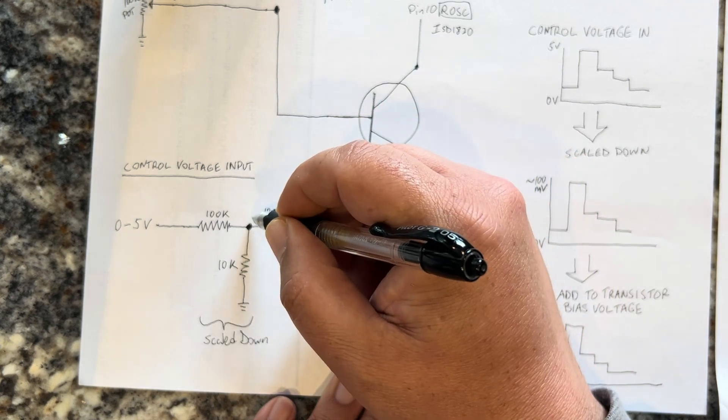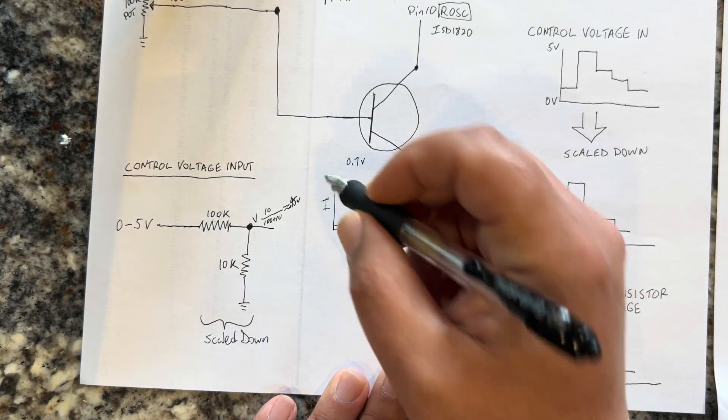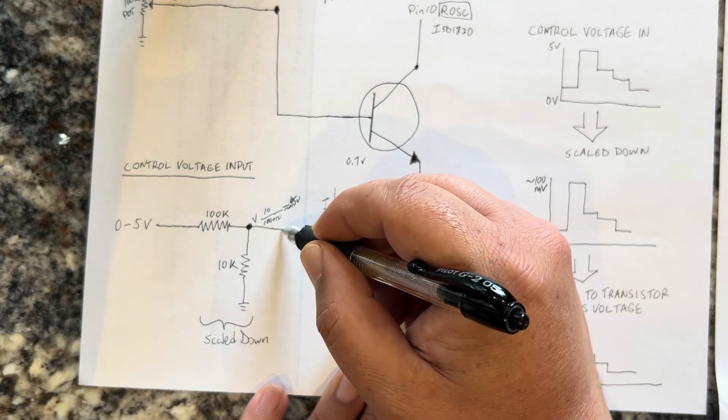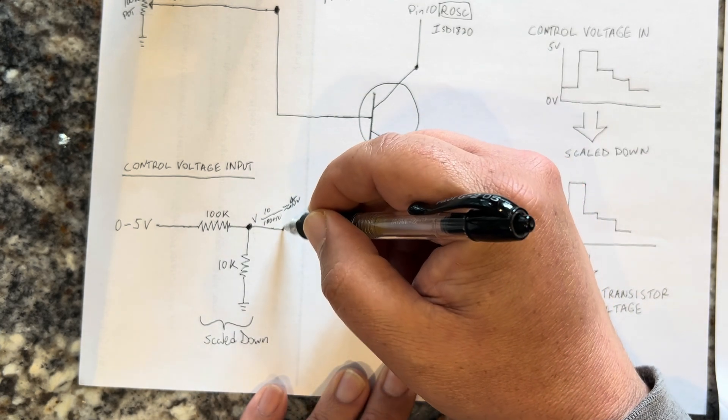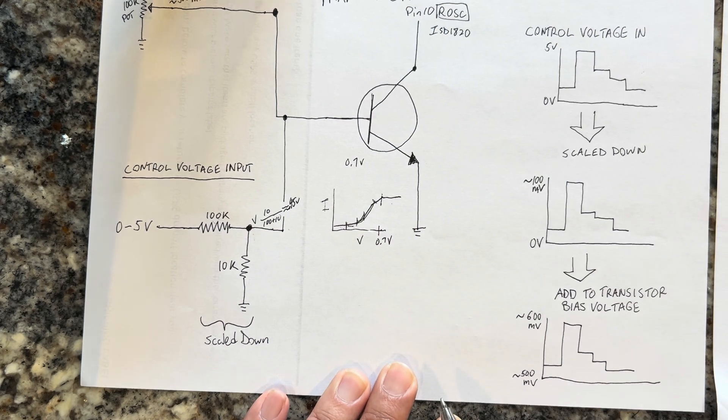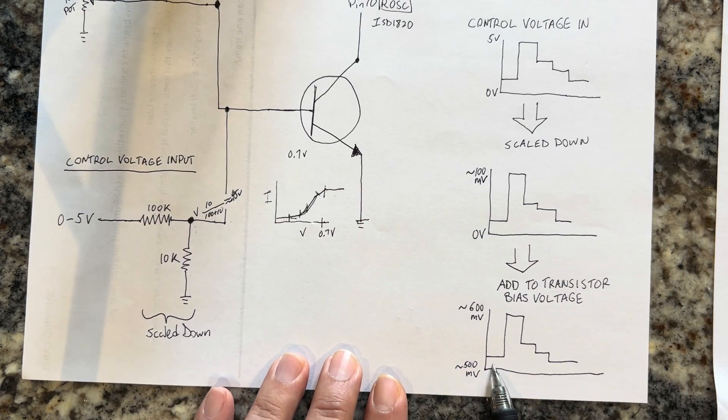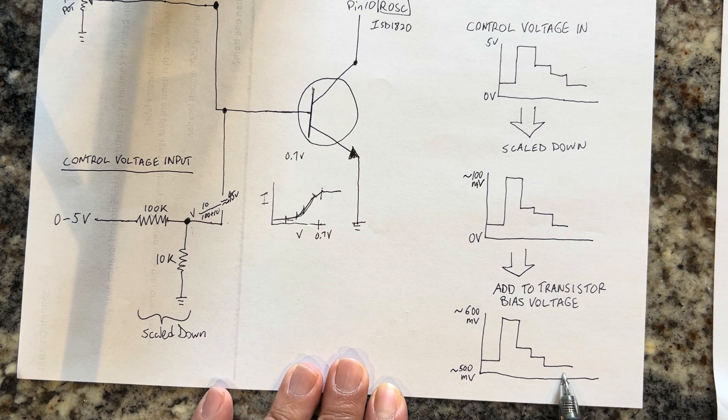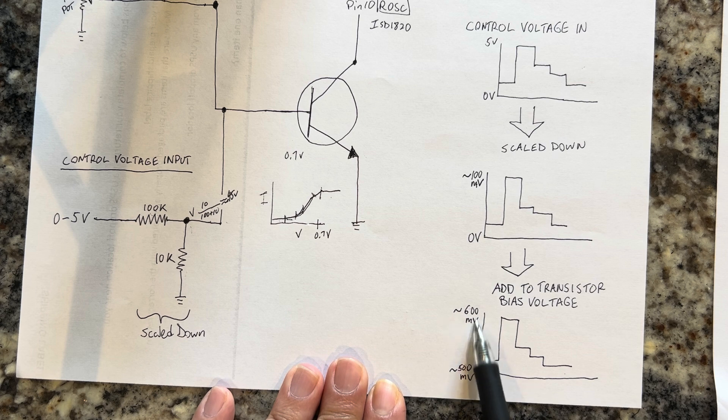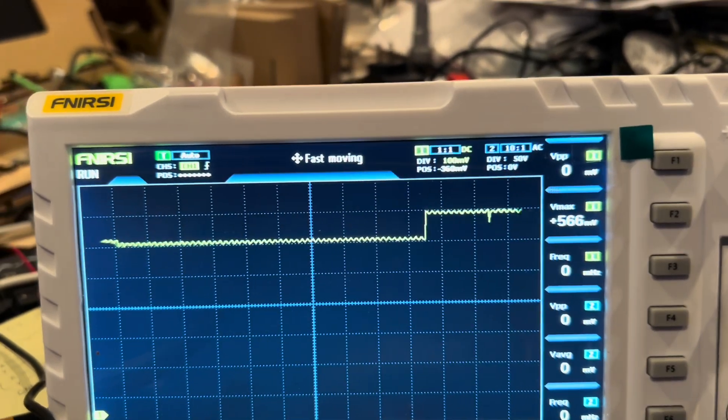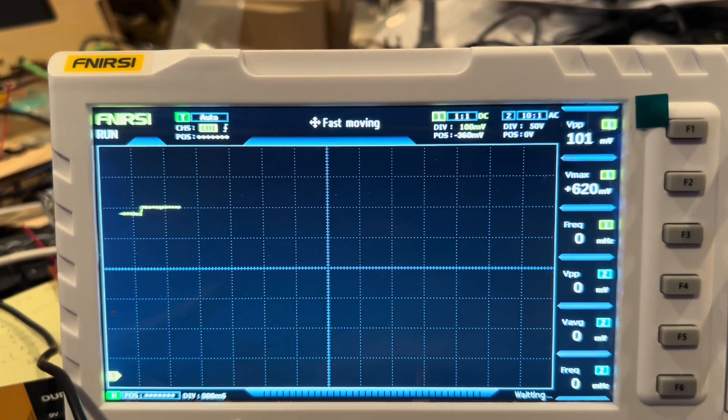Zero to 0.45 volts. And then what you do with this is you add it to this voltage so that you have a voltage applied to the base of the transistor to be in this range around 500 millivolts to 600 millivolts.